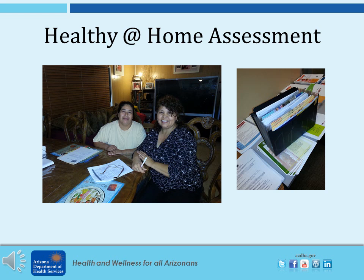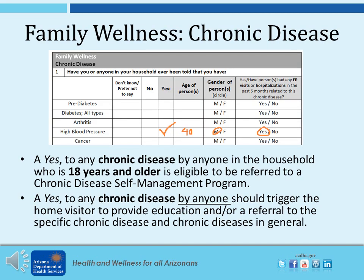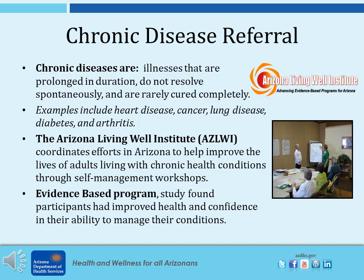In the chronic disease section, the home visitor will ask the client if anyone in the home has a chronic disease. A yes to any chronic disease by anyone in the home who is 18 years or older is eligible to be referred to a chronic disease self-management program. A yes to any chronic disease by anyone should still trigger the home visitor to provide education or a referral to that specific chronic disease. Chronic diseases are illnesses that are prolonged in duration, do not resolve spontaneously, and are rarely cured completely. Examples include heart disease, cancer, lung disease, diabetes, and arthritis.